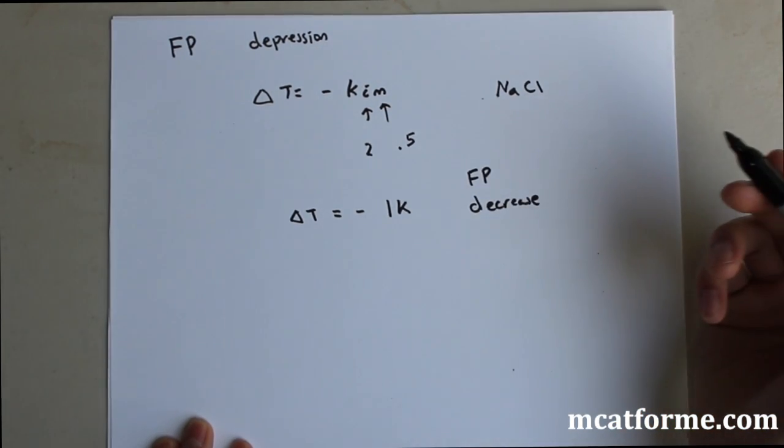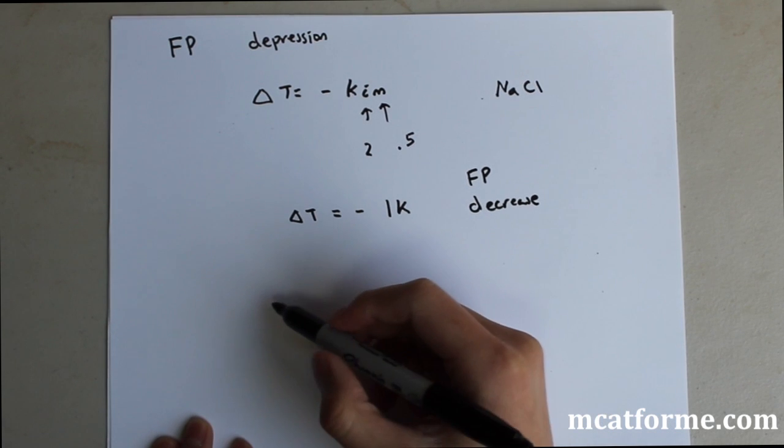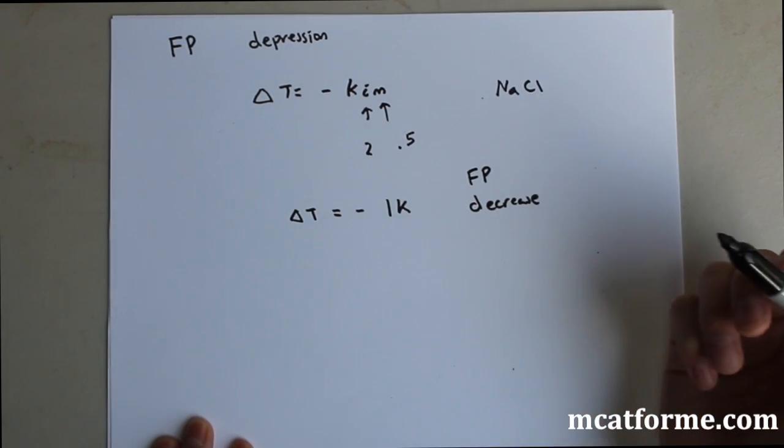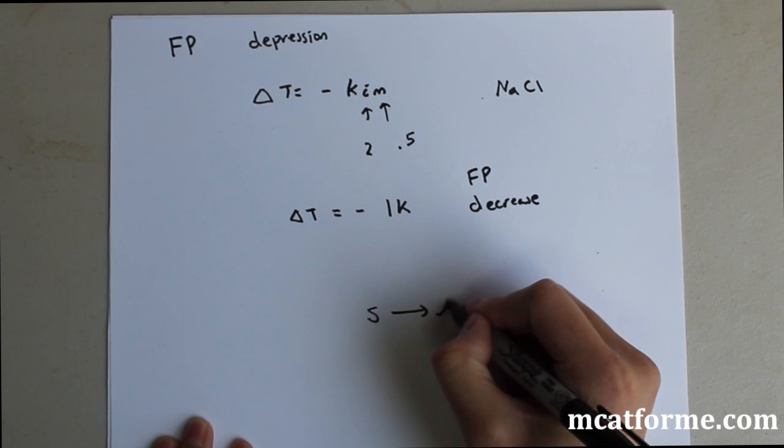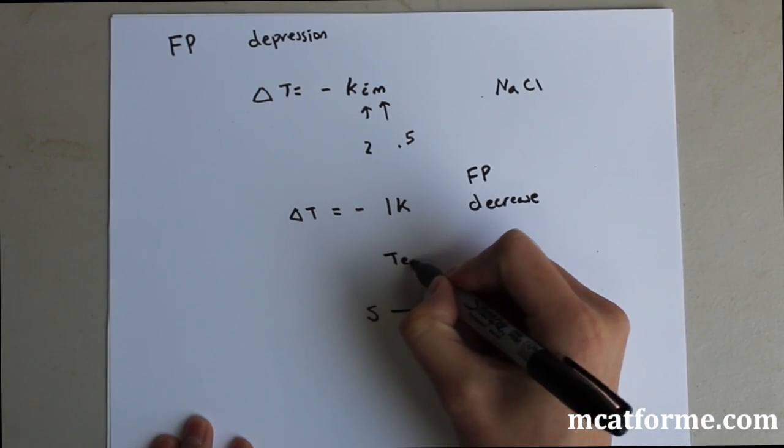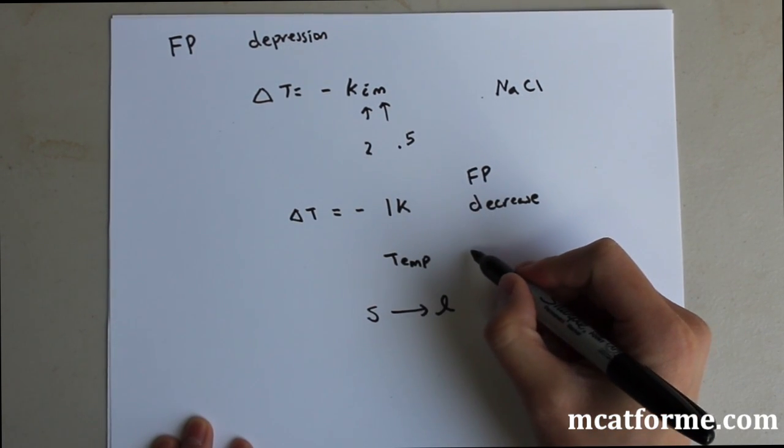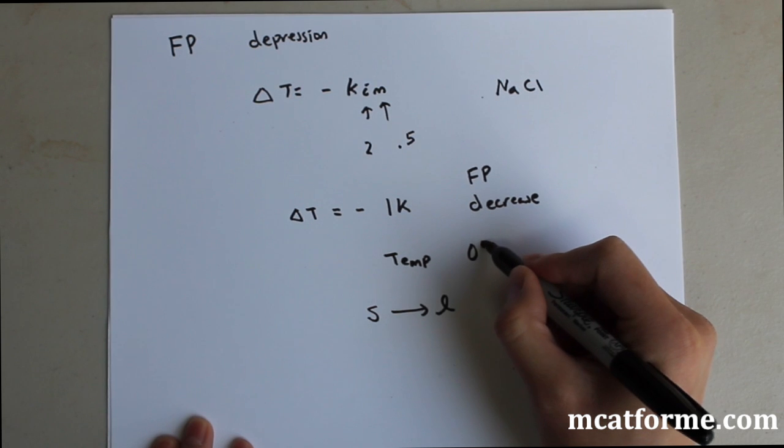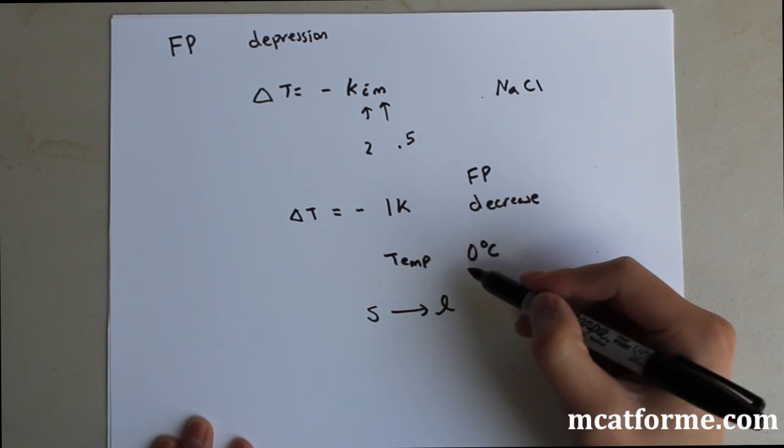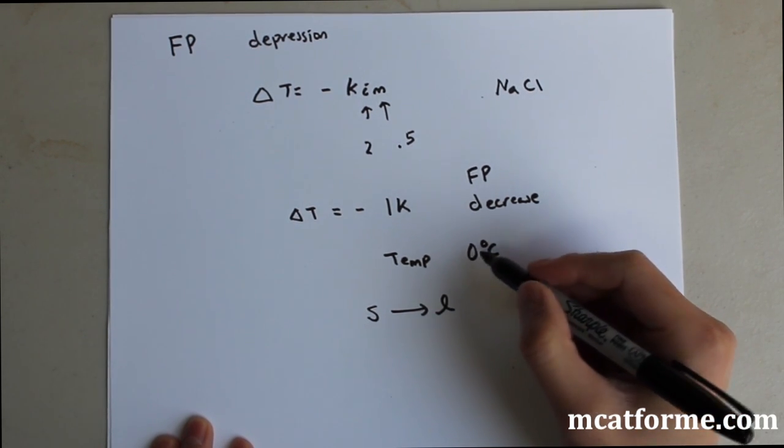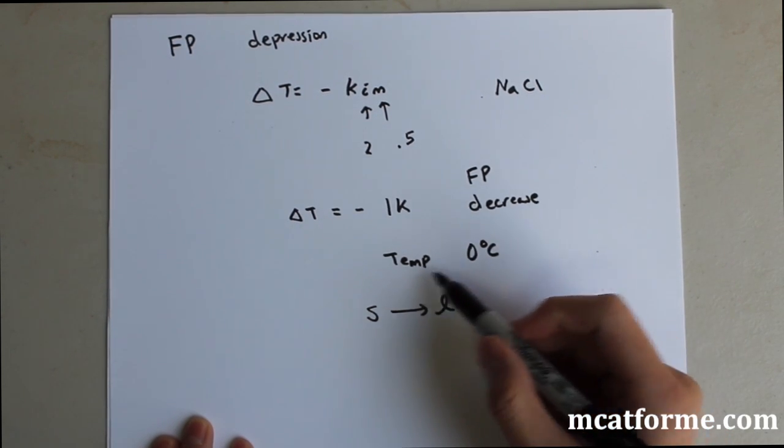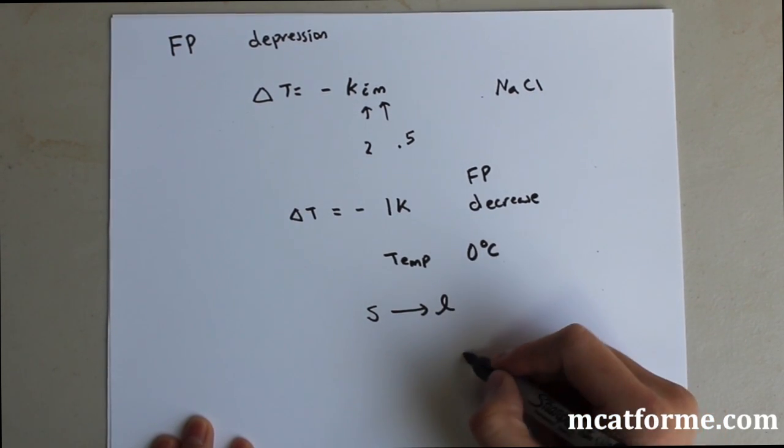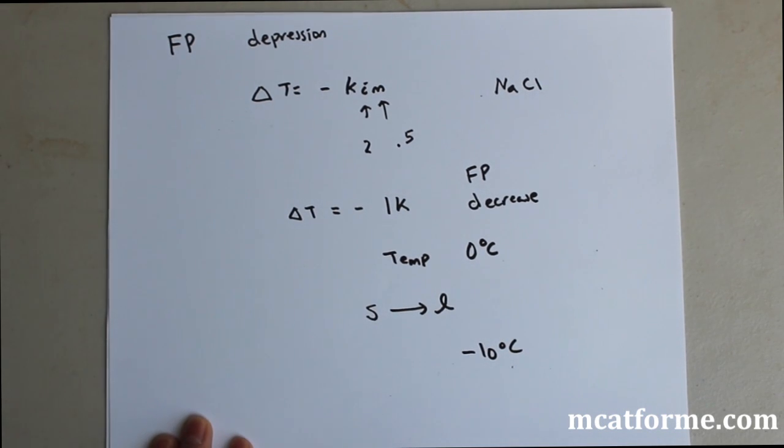So what does that mean? That means all of your solid ice or solid snow will now turn into liquid. Your solid will now turn into liquid because the temperature is constant. If we're still at 0 degrees Celsius as our temperature, and that's what water freezes at, but now we just change the freezing point down to negative 10 degrees Celsius because of this freezing point depression.